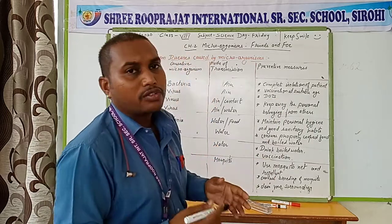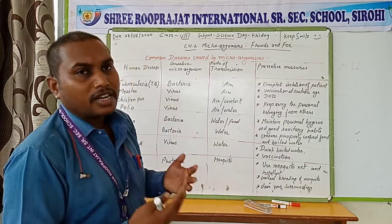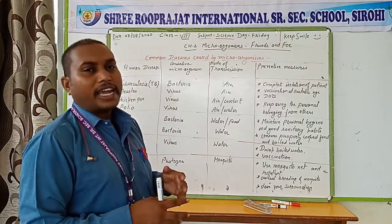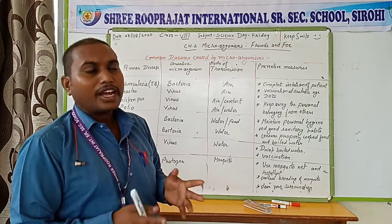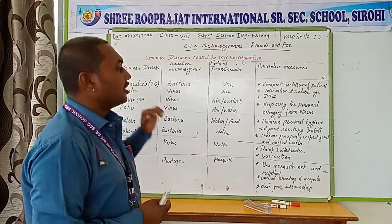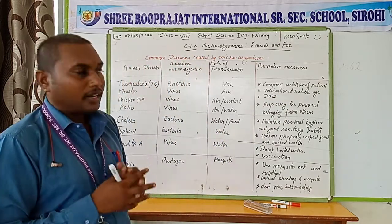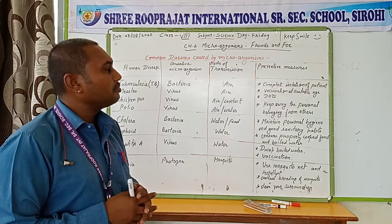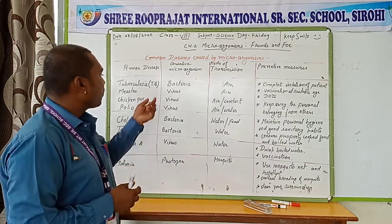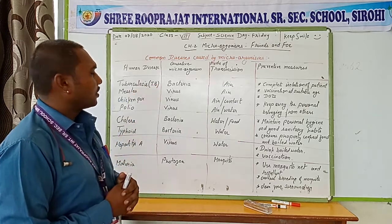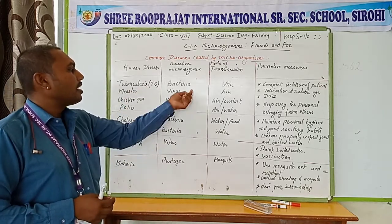The second preventive measure is vaccination at a suitable age. There is a vaccination for tuberculosis so that a person does not suffer from this disease. We can give children the vaccination to protect them. The DOT program is also done, where in 15 days vaccination and medicines are given to the patient so they can recover properly. Next, measles is another disease caused by viruses.